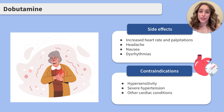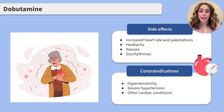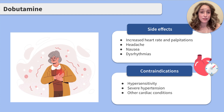Dobutamine is contraindicated in clients with a hypersensitivity to the medication, severe hypertension, and other cardiac conditions such as idiopathic hypertrophic subaortic stenosis, and tachydysrhythmias. One thing to keep in mind: dobutamine should be used with caution in clients with pre-existing cardiac conditions, and it is generally not used for long-term management of heart failure.